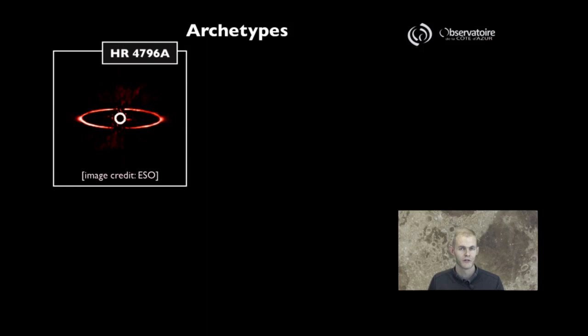which is an object fairly recently imaged with an instrument at ESO called SPHERE. This is a young star surrounded by a disk, and you can see that the disk has a very strong signature in this image.